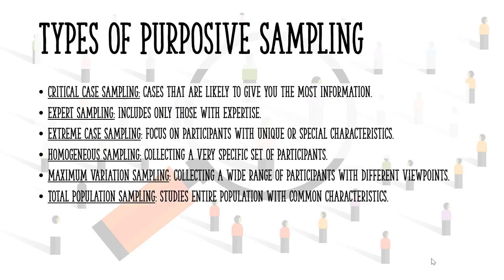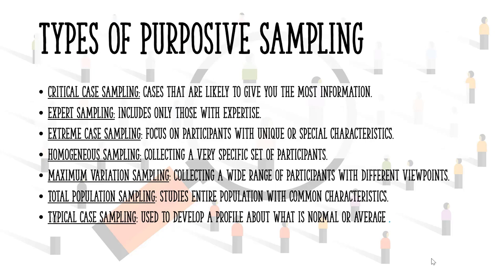With total population sampling, you're going to study an entire population who share common characteristics — for example, you might study all violin players. Typical case sampling allows you to develop a profile about what is normal or average for a particular phenomenon.